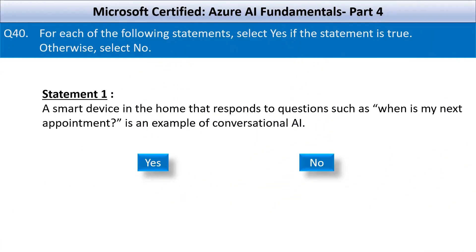Hey folks, welcome to part 4 of our Microsoft Certified Azure AI Fundamentals ultimate course. We are starting with question number 40. In this part of our series, for each of the following statements, select yes if the statement is true, otherwise select no.